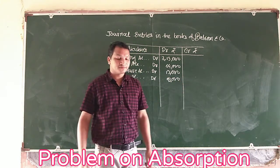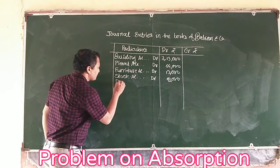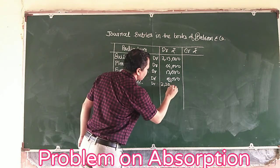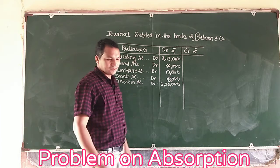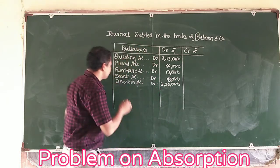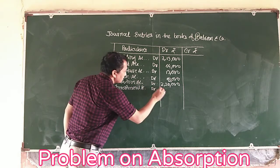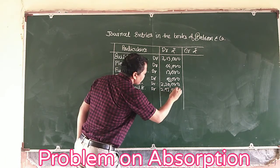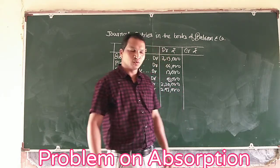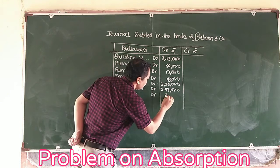The next asset is ₹2,20,000. Debtors account debit ₹2,20,000. The next asset is investment — investment is ₹2,93,000. Investment account debit ₹2,93,000. Then cash is ₹42,000. Cash account debit ₹42,000.